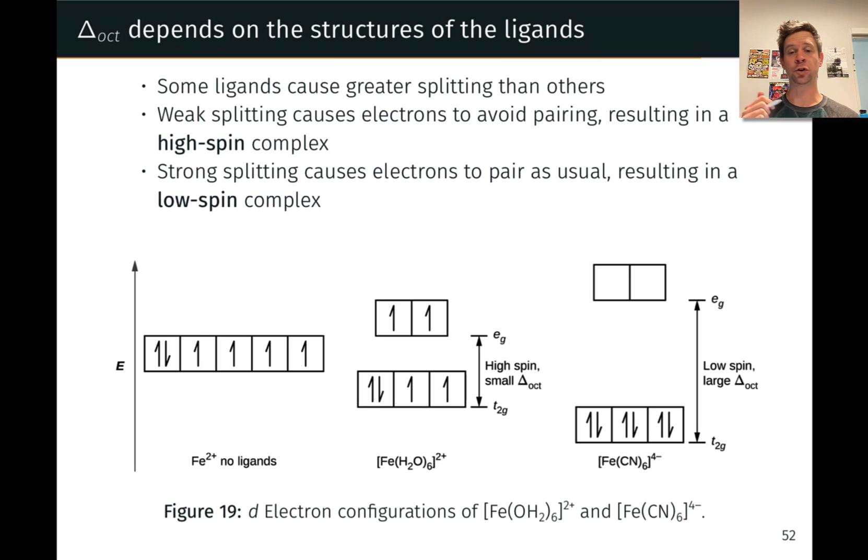And in cases when the crystal field splitting, this delta oct value is relatively small, small relative to the pairing energy, it's actually energetically favorable to avoid pairing the electrons, placing these electrons in the higher energy E sub g level to avoid pairing rather than pairing them up in the T2g level. And so in cases where delta oct is relatively small, we see this relatively high number of unpaired electrons.